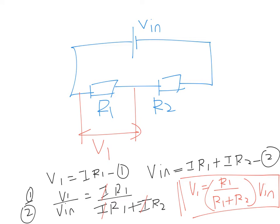So basically the conclusion is: if you want to find the PD across a resistance, you take that resistance over the total resistance in series, times the total voltage. That's the formula for this PD.